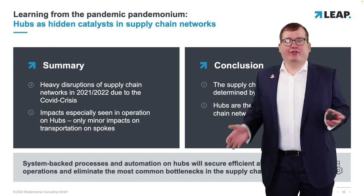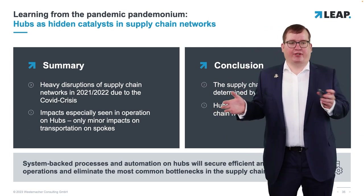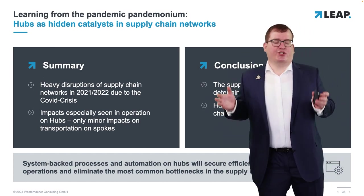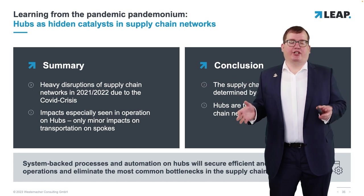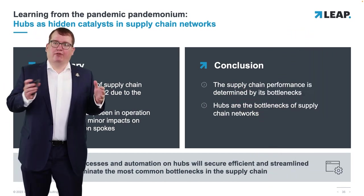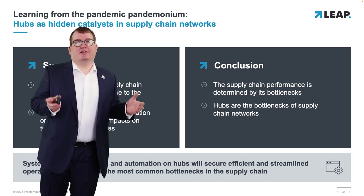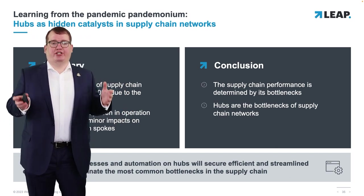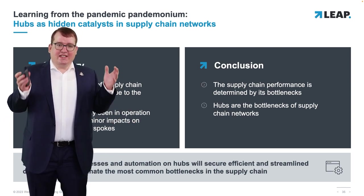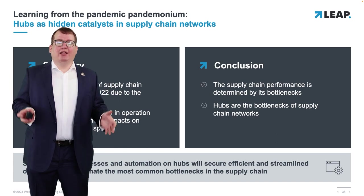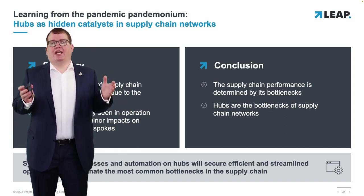To recap: we saw heavy disruptions in supply chain networks in 2021 and 2022 due to the COVID crisis in 2020, with impacts especially in the operations of hubs, and only minor impacts on transportation on spokes — at least in the example of the Northern American Land Bridge. The conclusion: supply chain performance is determined by its bottlenecks, and in this crisis hubs were those bottlenecks. The key takeaway is that only system-backed processes and automation will get you to secure, efficient, and streamlined operations in hubs and eliminate the most common bottlenecks in supply chain networks.